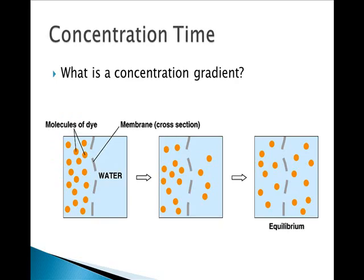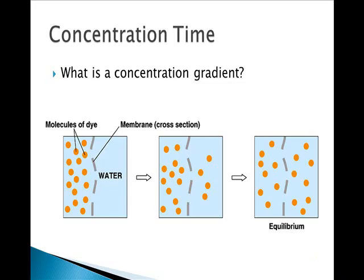When talking about ions moving from one side to the other, we talk about concentration gradients. A concentration gradient is a regular concentration change of a substance over a distance in a particular direction. The greater the concentration gradient, the faster substances move toward equilibrium. Keep the concentration gradient in mind for the next lecture, where we'll talk about different types of passive transport.